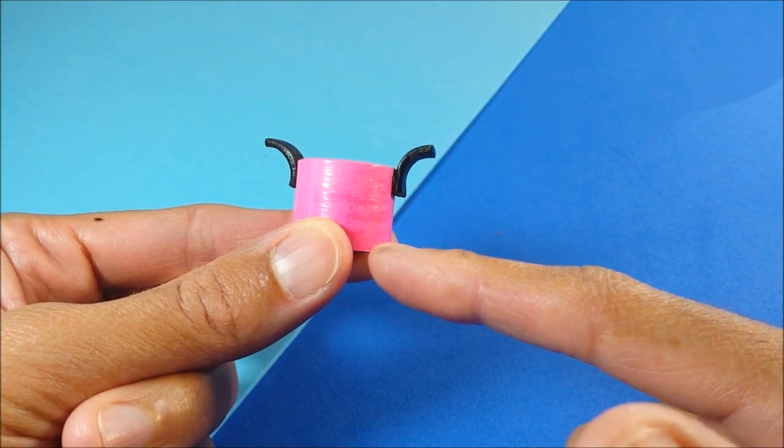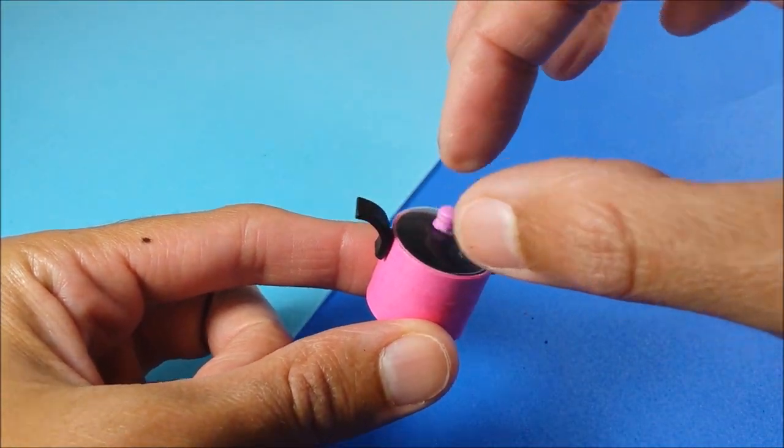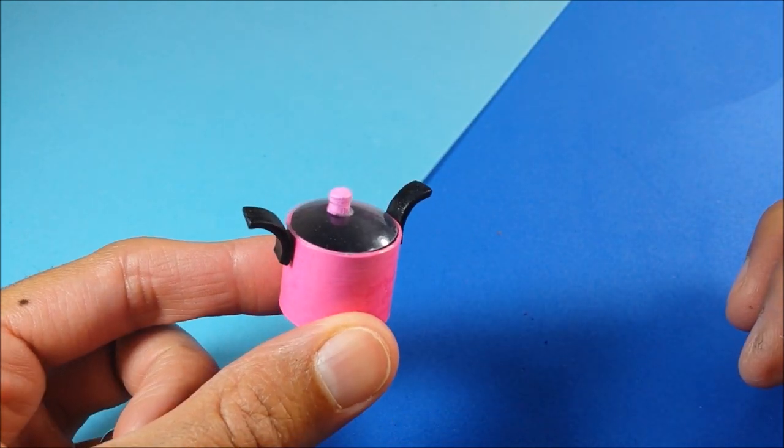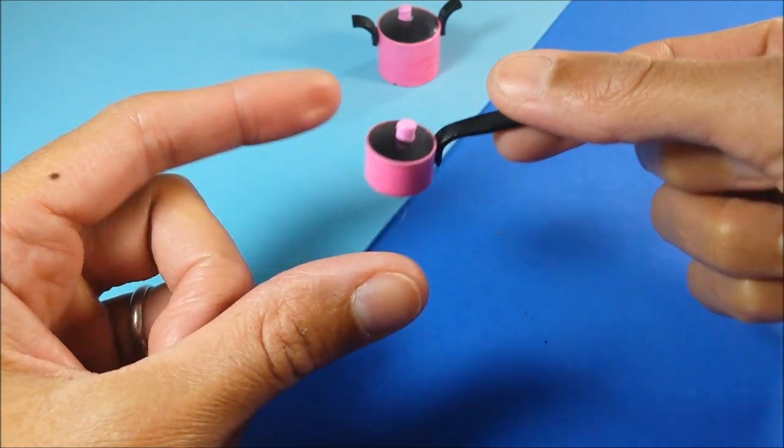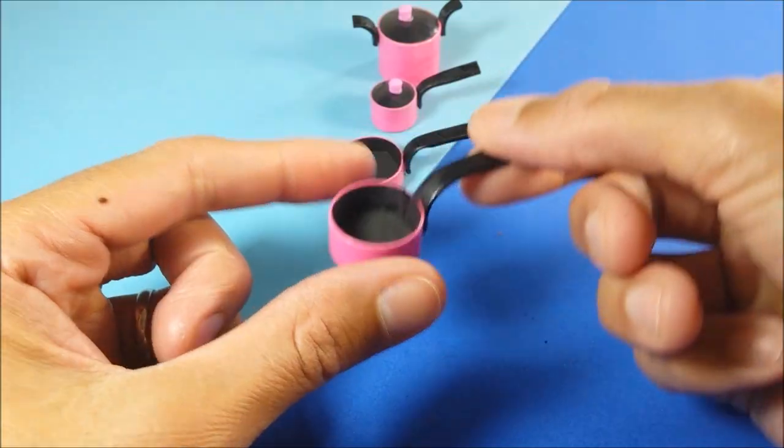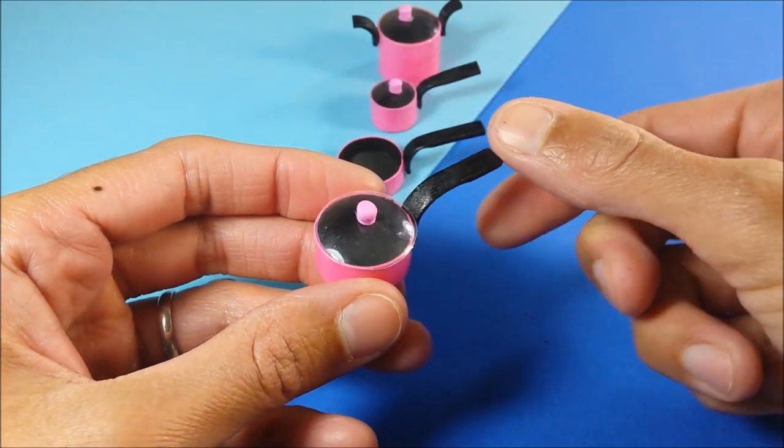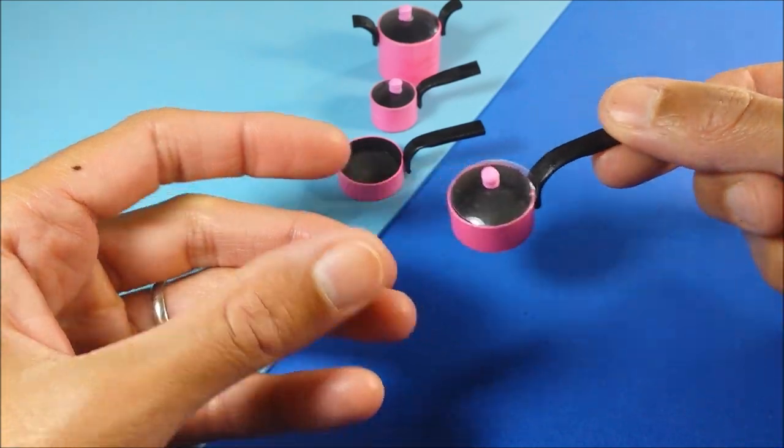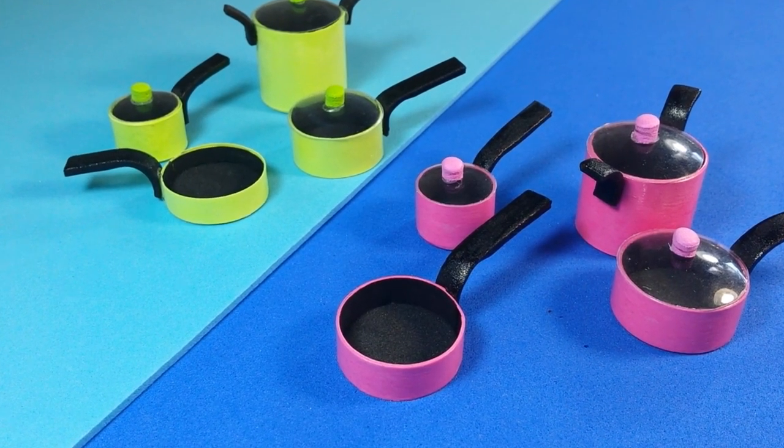Here you can see where I've used a little bit too much Mod Podge—it kind of changed the color. I pop on my lid and my deep pot is good to go: a little saucepan, a little frying pan, and my slightly larger saucepan. Well guys, I sure hope you enjoyed the video. If you did, be sure to like, share, and subscribe. Thanks guys!